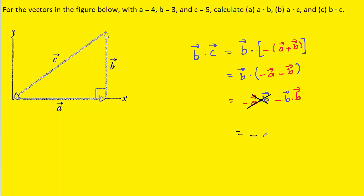So then we're left with negative the dot product of vector B and vector B. So that would be the magnitude of B times the magnitude of B times the cosine of the angle between vector B and vector B, which will be once again zero degrees. So let's go ahead and plug in the magnitude of vector B, which was 3.